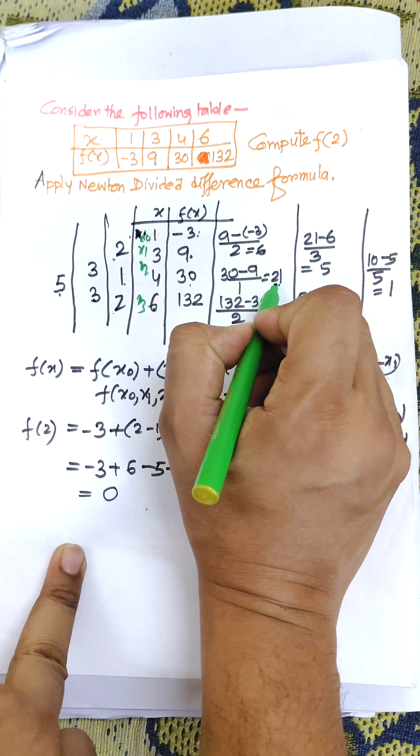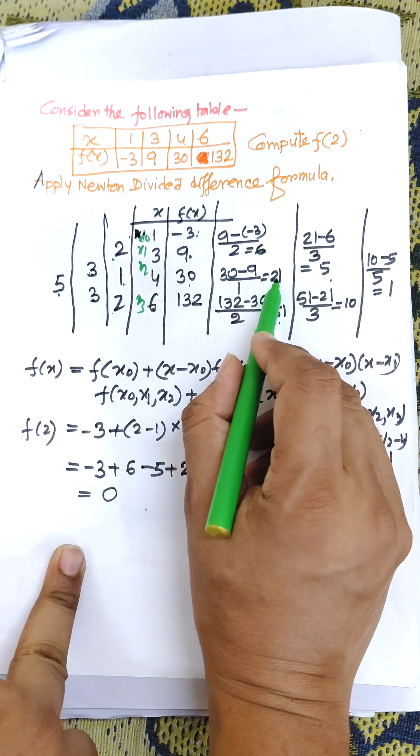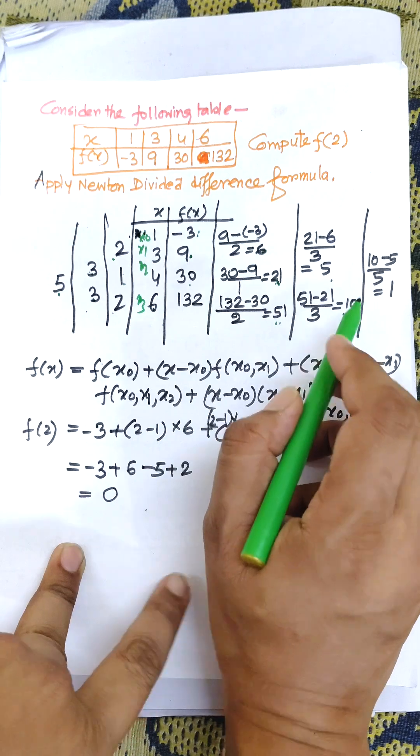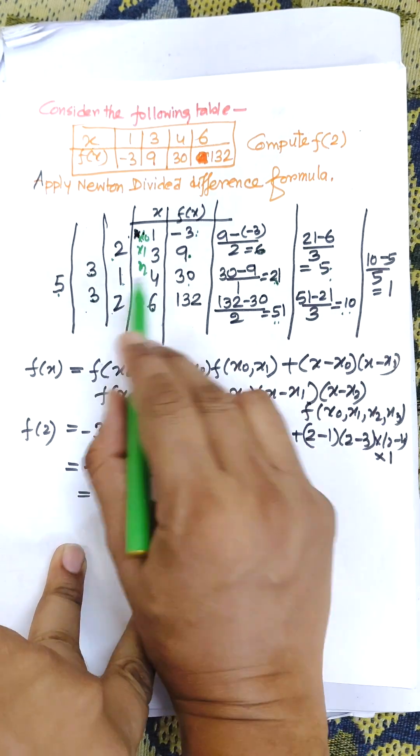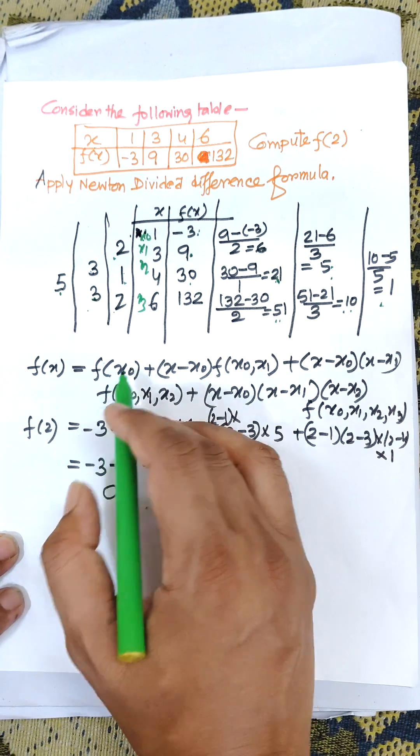Now, 21 minus 6 divided by 3 equals 5. 51 minus 21 divided by 3 equals 10. 10 minus 5 divided by 5 equals 1. So this is the Newton divided difference table.